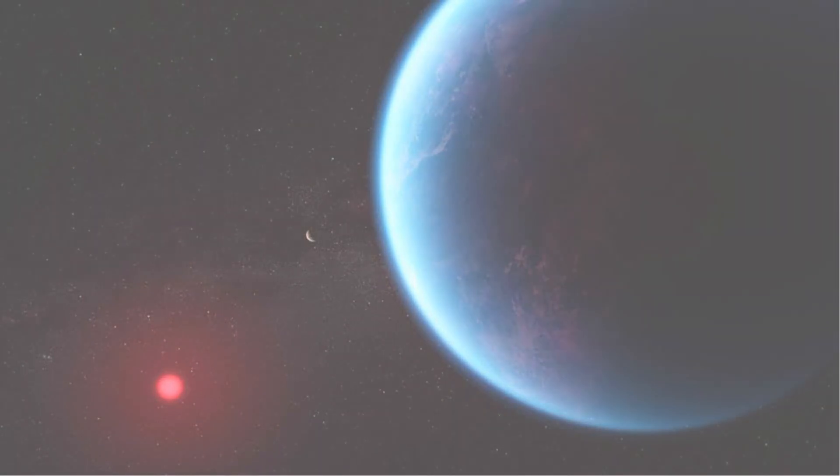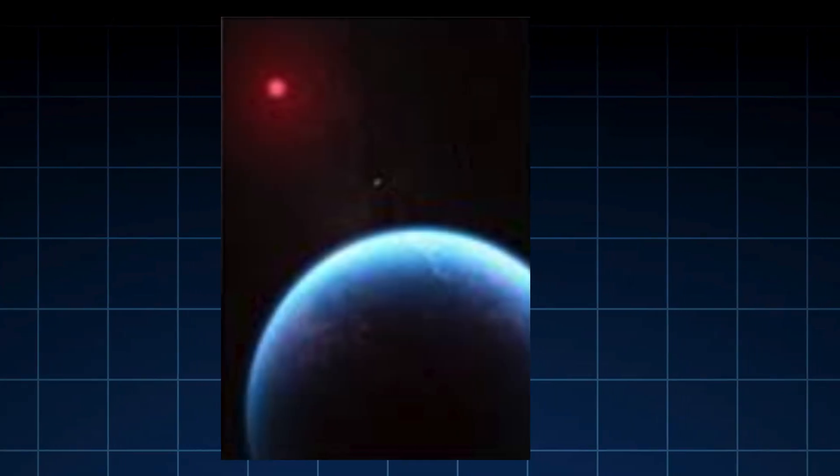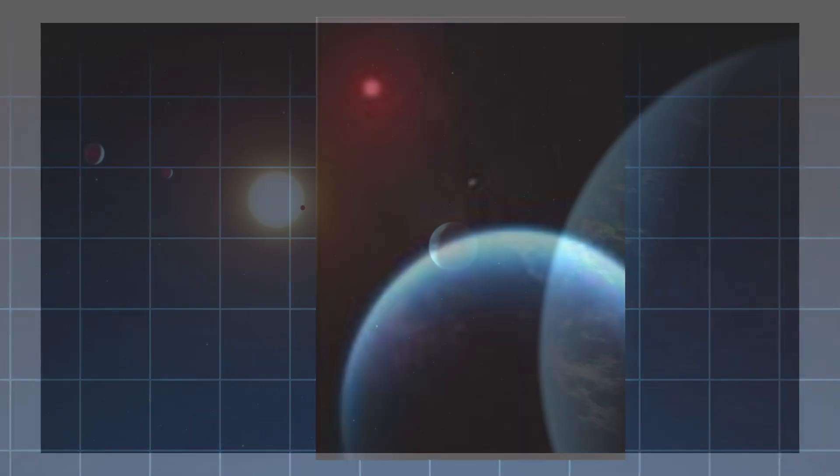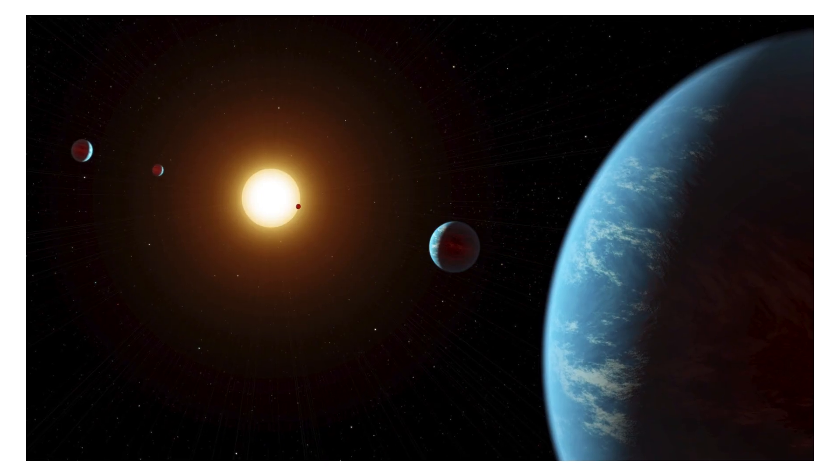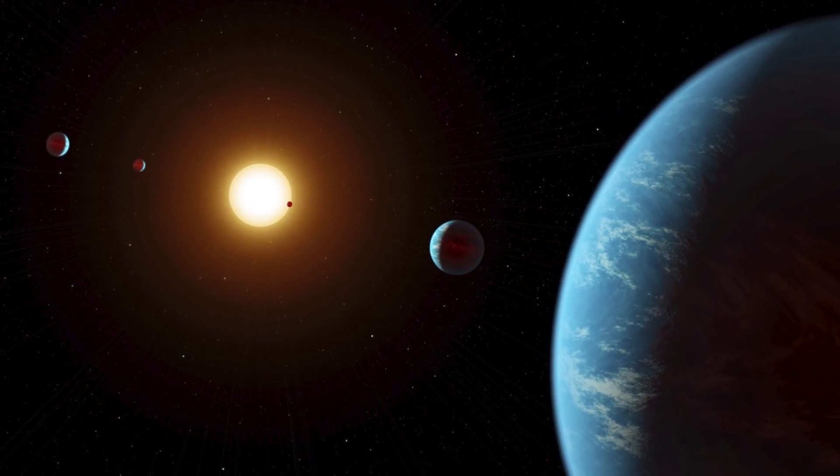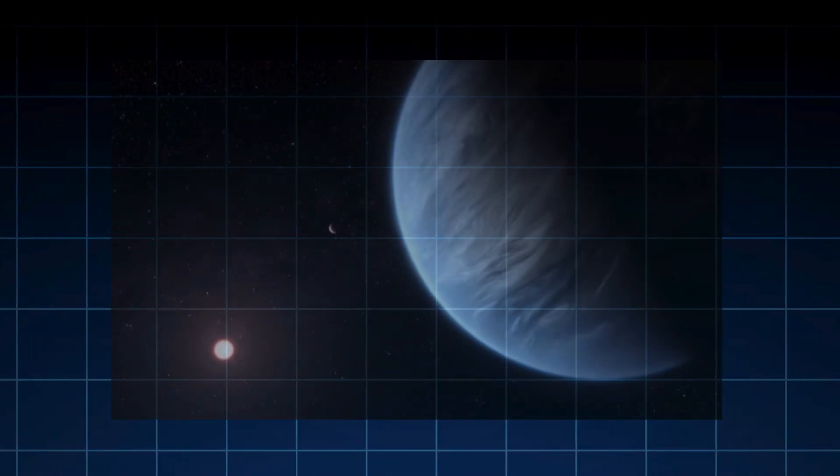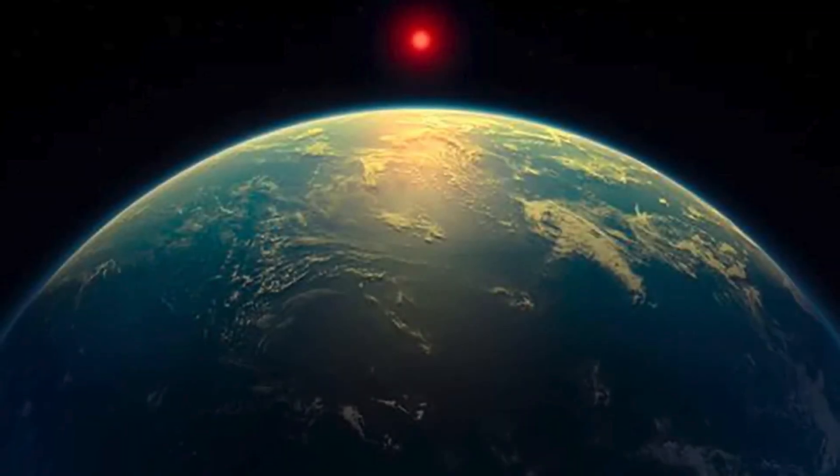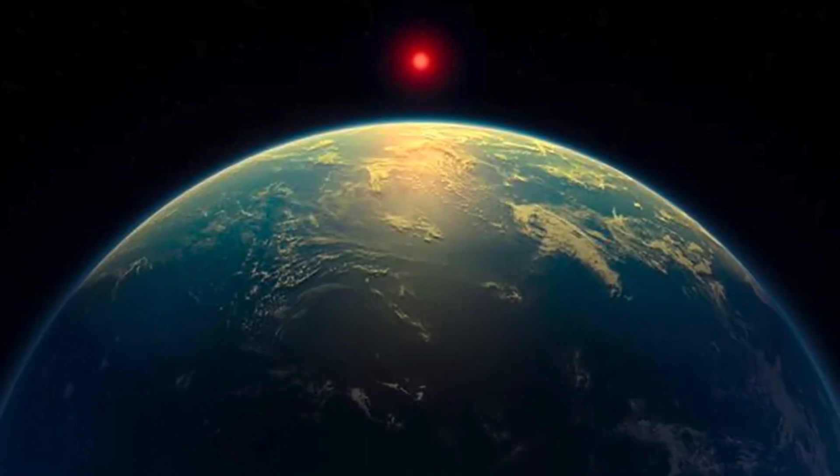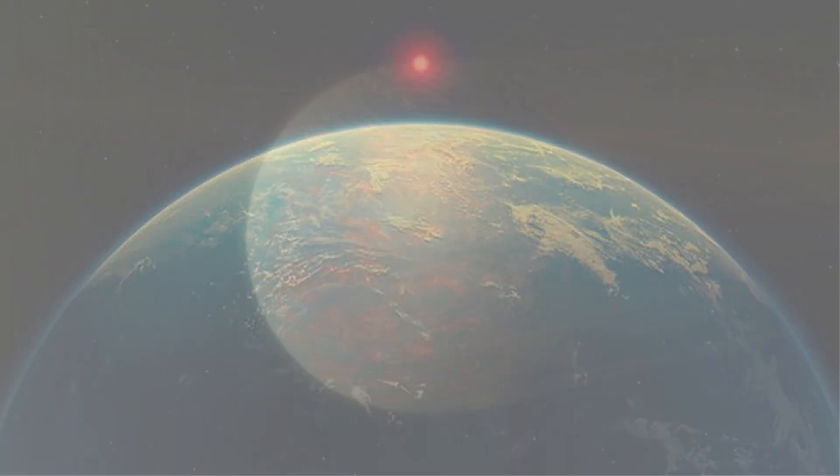Perhaps the most provocative findings arise from worlds in the habitable zone, where conditions flirt with the possibility of oceans. K2-18b, a sub-Neptune enveloped in hydrogen, has yielded signals consistent with dimethyl sulfide and disulfide, molecules produced on Earth almost exclusively by marine life.